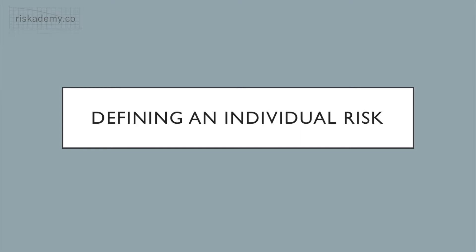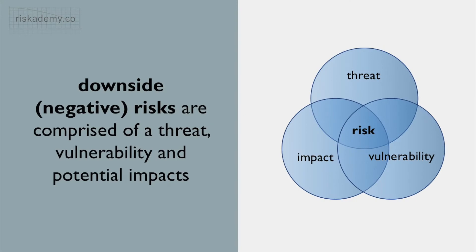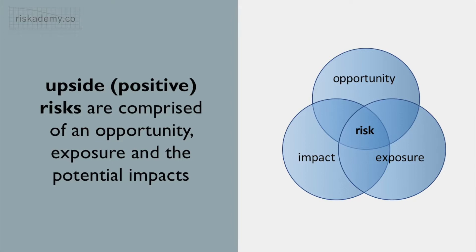What follows is a bottom-up framework for individual risk that still aligns with the ISO definition. This framework is both practical and theoretically sound, and with some terminology tweaking we can use the same framework for downside and upside risks. In this framework, risk is comprised of three elements. Negative or downside risks are comprised of a threat, vulnerability and potential impacts, whereas upside risks are comprised of an opportunity, exposure and potential impacts. By separating the key components, this framework allows each element to be addressed separately in the risk assessment and risk treatment processes, helping prepare clear, understandable risk descriptions and more effective risk treatment plans.